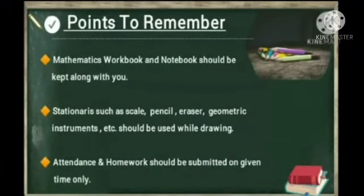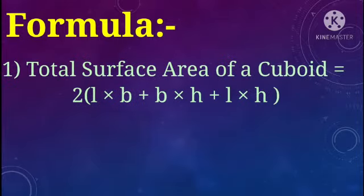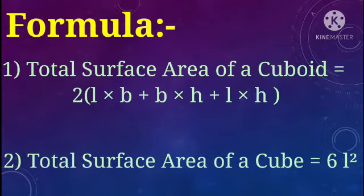Points to remember. Let us recall some formulas and measurements we studied in our lower class. Total surface area of a cuboid is equal to 2 into (L×B + B×H + L×H). Total surface area of a cube is equal to 6L².